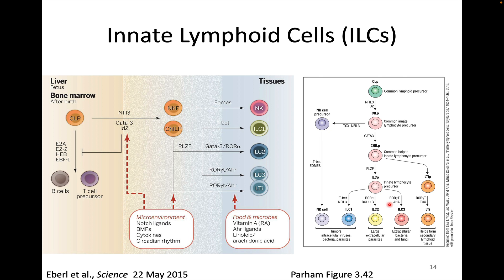One of these is the NK cell, and there are others — ILCs, or innate lymphoid cells. When we look at innate lymphoid cells, these cells all come from the lymphoid lineage from a lymphoid cell precursor, as you can see from your textbook. The NK cell has a lot in common with a CD8-positive T cell — you can think of it as the innate lymphoid cell representative of a CD8 T cell.